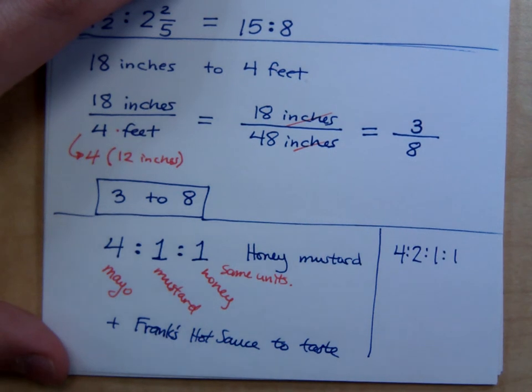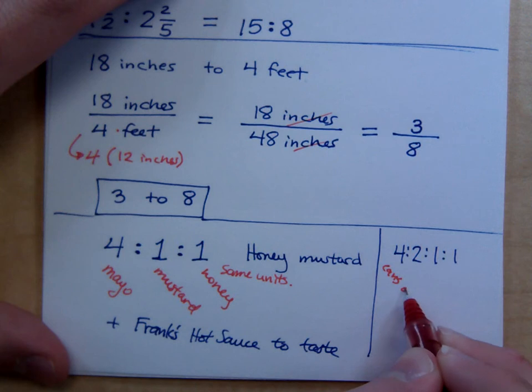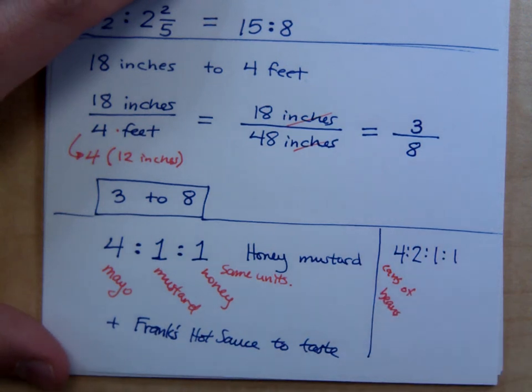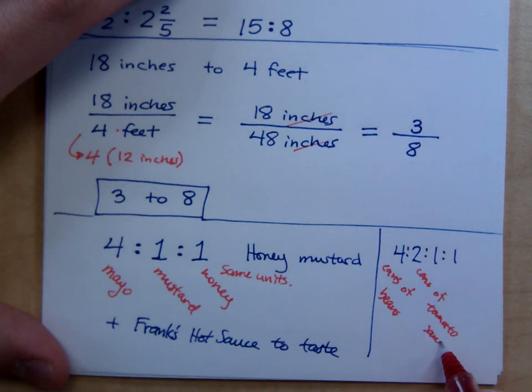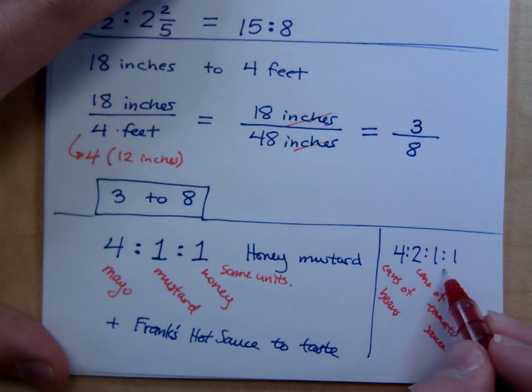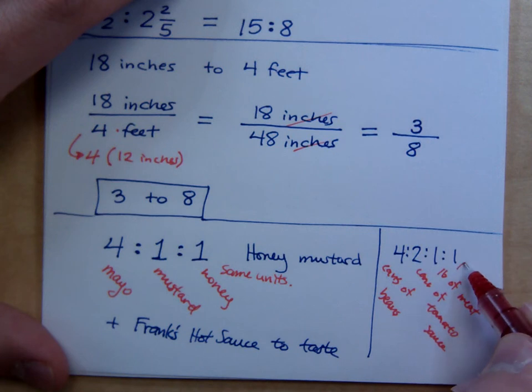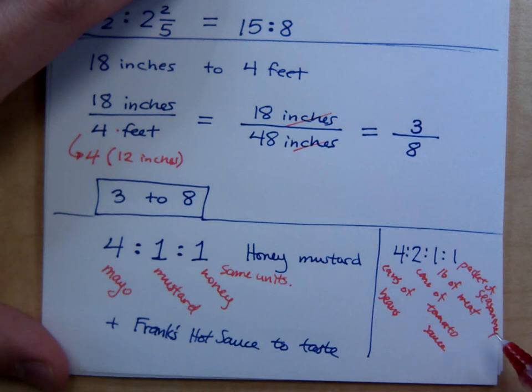And this means four cans of beans, whether it's kidney, pinto, I like to throw in black just for fun. I can't find red beans. I like to have red beans in there. To two cans of tomato sauce. Of course, if you're shopping, you can get one large can. It's the same thing. To one pound of meat to one packet of seasoning.